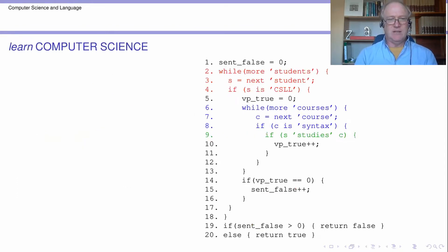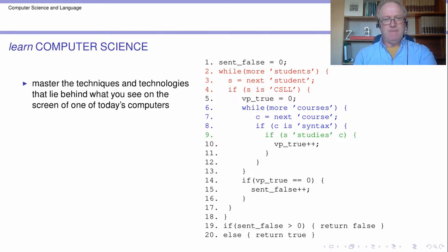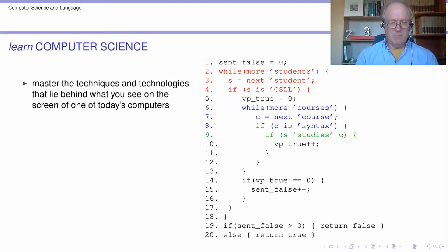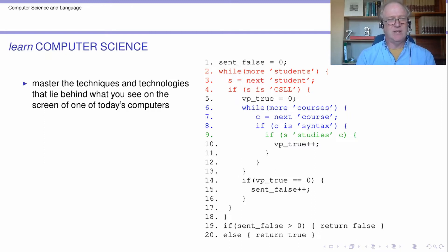One of the parts is computer science. This is probably the part which people have the most intuitions about before they enter the degree. The mission is to make you a master of the techniques and technologies that lie behind what you see on the screen of a computer. Computers come in all shapes and sizes, from large desktops down to little tiny things you wear on your wrist.